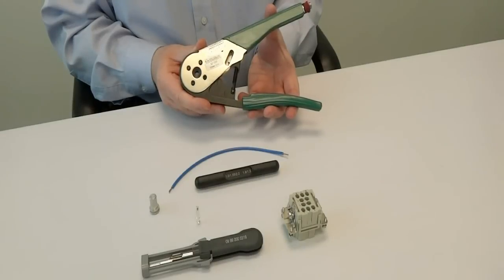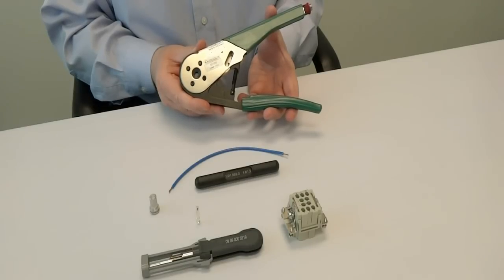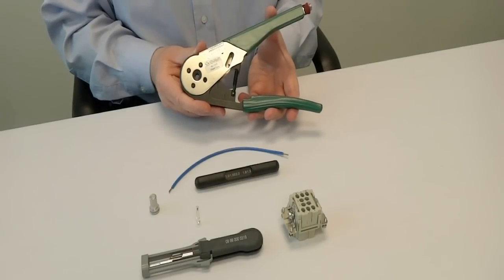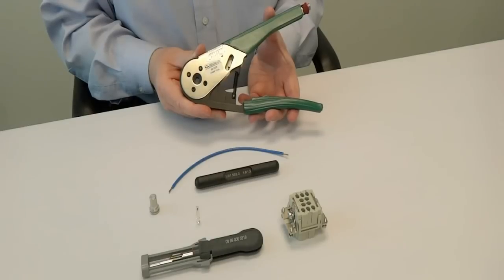Hello from Harding. This is a short video about how to use Harding crimp tool 0999-000-0001. This crimp tool will crimp our Han D crimp contacts beginning with part number 0915, our Han E crimp contacts beginning with 0933, and our Han C crimp contacts beginning with 0932. For this video we're going to crimp a Han E crimp contact beginning with part number 0933.